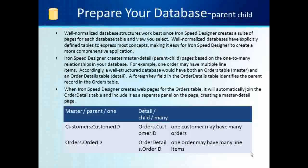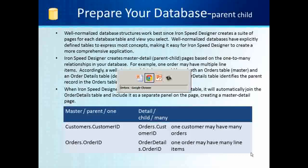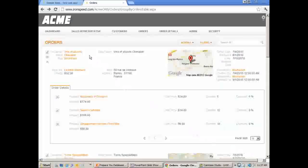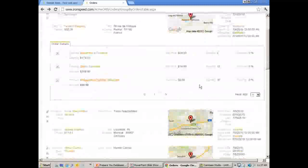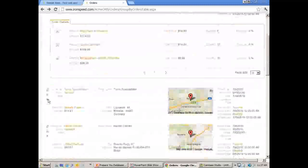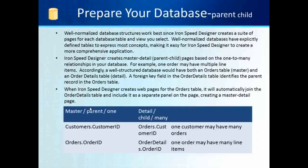Let's look at an example of that. Here is the Acme orders table or application, and you can get this online at www.ironspeed.com. Here is the parent with all the parent information, and below you'll see the orders detail, and subsequent orders have the same. As you can see, a customer has a customer ID, and in the parent or child table, one customer may have many orders. Same way with orders and order ID, and the order detail table, one order may have multiple line items.